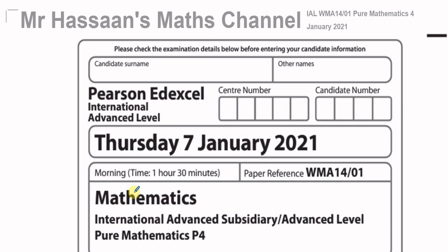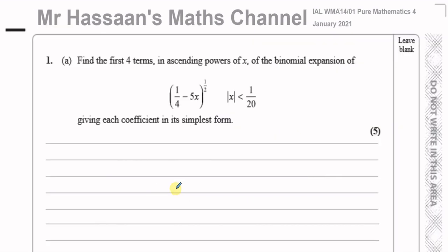Question number one: binomial expansion. Find the first four terms in ascending powers of x of the binomial expansion of (1/4 minus 5x) to the power of a half. They've told us the modulus of x has to be less than 1/20 for this to be a valid expansion, and we've got to give each coefficient in its simplest form.